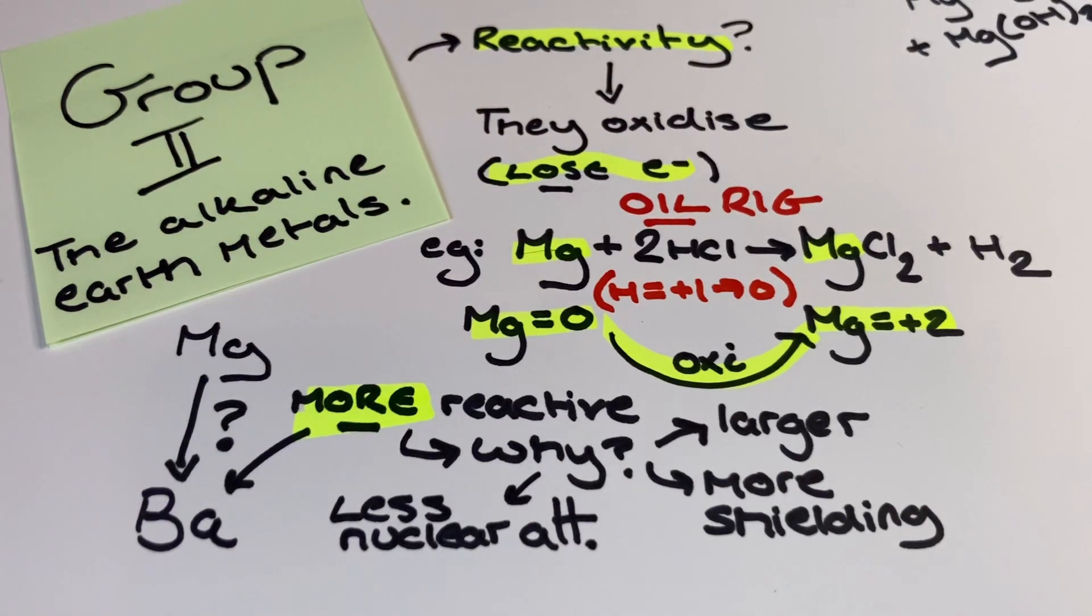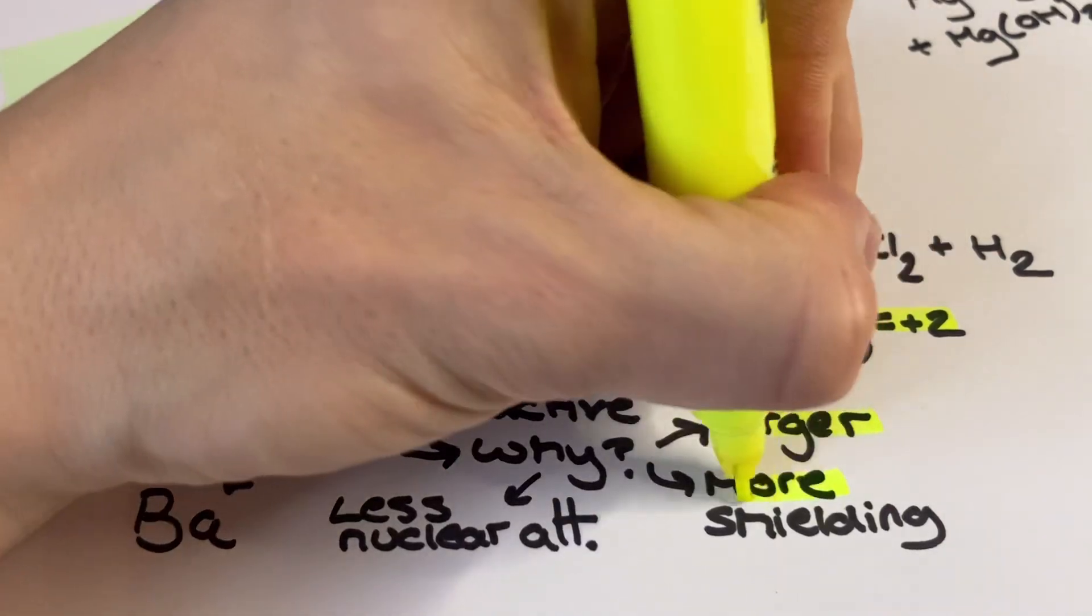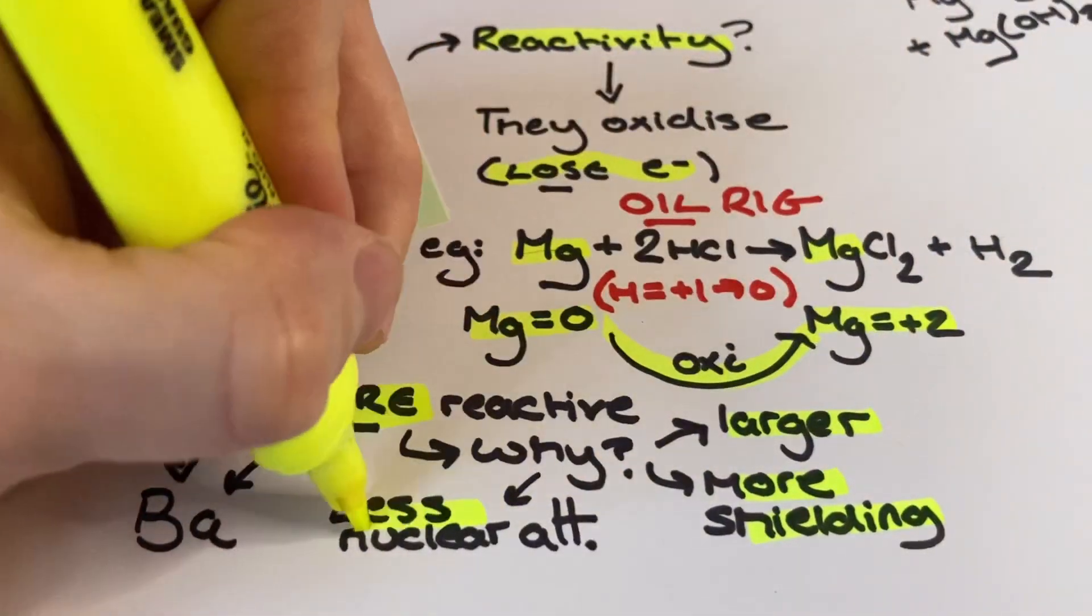Do we need to consider the trend in reactivity down the group? Because we are aware with our knowledge of ionization energy that there is a change in the attraction between the outermost electrons and the nucleus as we move down the group.